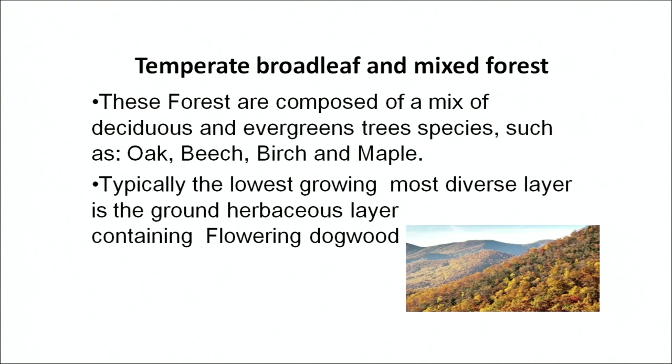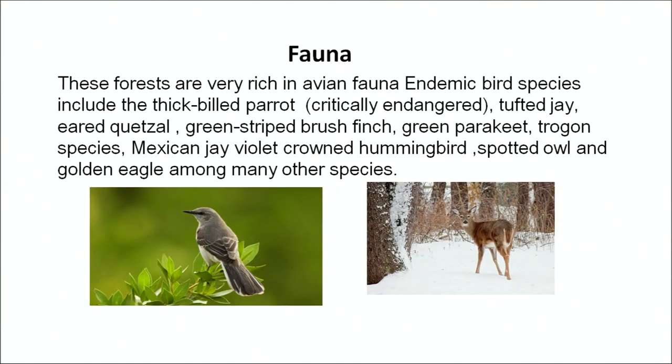Typically, the lowest growing and most diverse layer is the ground herbaceous layer containing the flowering dogwood. These forests are very rich in avian fauna which are endemic species. They include the thick-billed parrot which is an endangered species, tufted jay, eared quetzal, green-striped brush finches, green parakeets, trogon species, Mexican jay, violet-crowned hummingbirds, spotted owl and golden eagle, among other species found here.